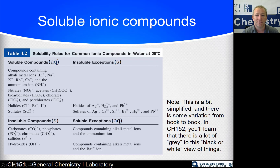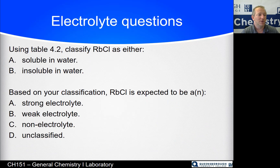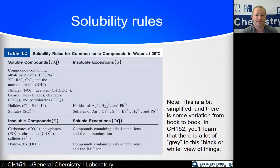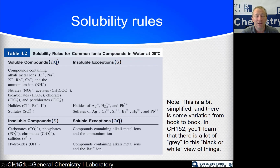Using that table, classify rubidium chloride as either soluble or insoluble in water, and then decide whether it is a strong electrolyte, weak electrolyte, non-electrolyte, or unclassified. Since rubidium chloride contains an alkali metal, rubidium is definitely going to be a soluble ionic compound, and as a soluble ionic compound it is therefore a strong electrolyte.